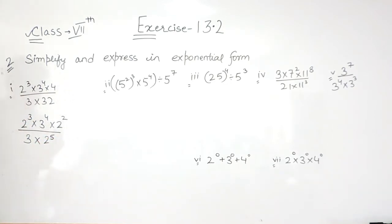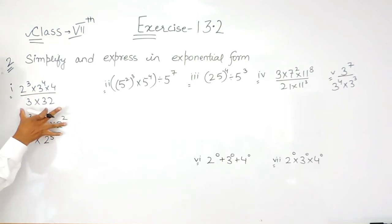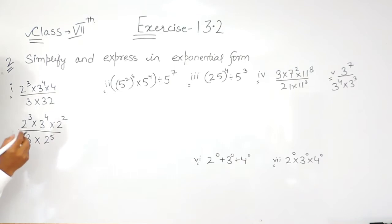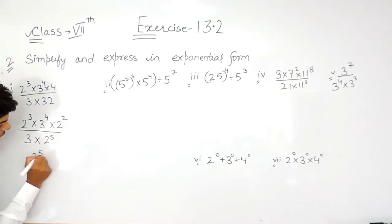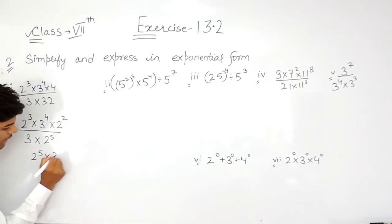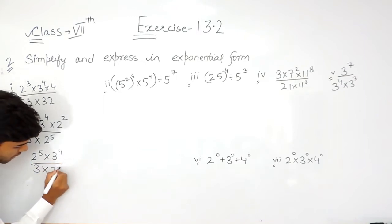Now, in the numerator, these two are having the same base, so their powers will get added up. That will give us 2 to the power 5 multiplied with 3 to the power 4, upon 3 into 2 to the power 5.